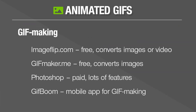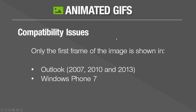Where can you get these done? A handful are free: Image Flip, GIF Maker, Photoshop, GIF Boom, etc. But beware — there are often compatibility issues with some animation. Outlook and Windows Phone 7 are two where animated GIFs seem to be an issue: only the first frame of the image is shown. These perform well in Gmail, Yahoo, and similar interfaces, but be aware of those incompatibilities.